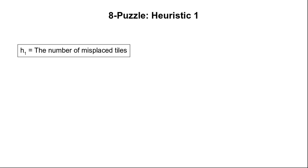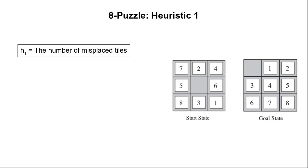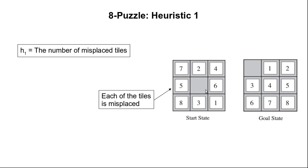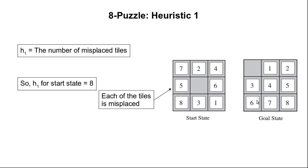Here we discuss two possible heuristic functions for the 8 puzzle problem. The first heuristic function is the number of misplaced tiles (h1). Considering the given start state and the corresponding goal state, tile number 7 in the start state is at the first row first column, whereas its position in the goal state is third row second column, so it is not at the correct place. Similarly the other tiles are also misplaced, so all 8 tiles are misplaced and h1 for the given start state equals 8.